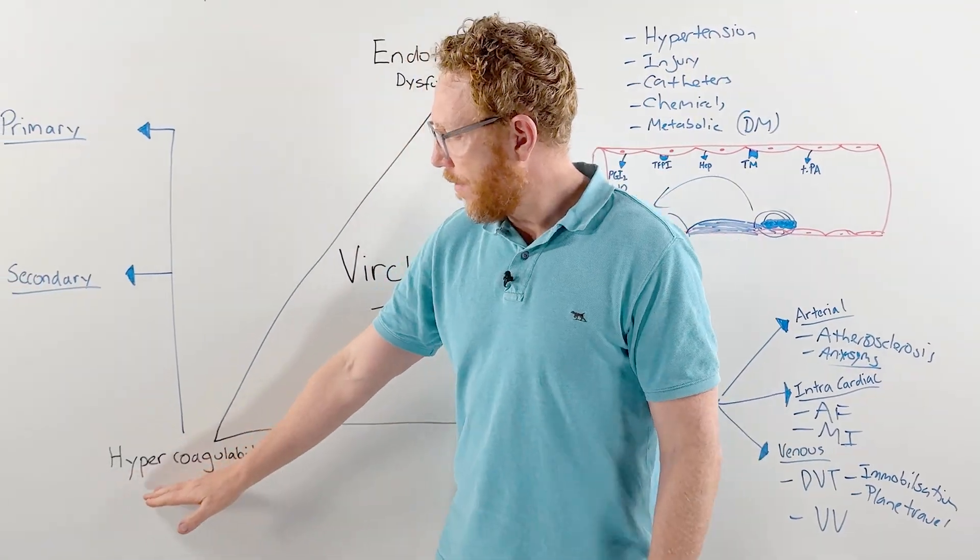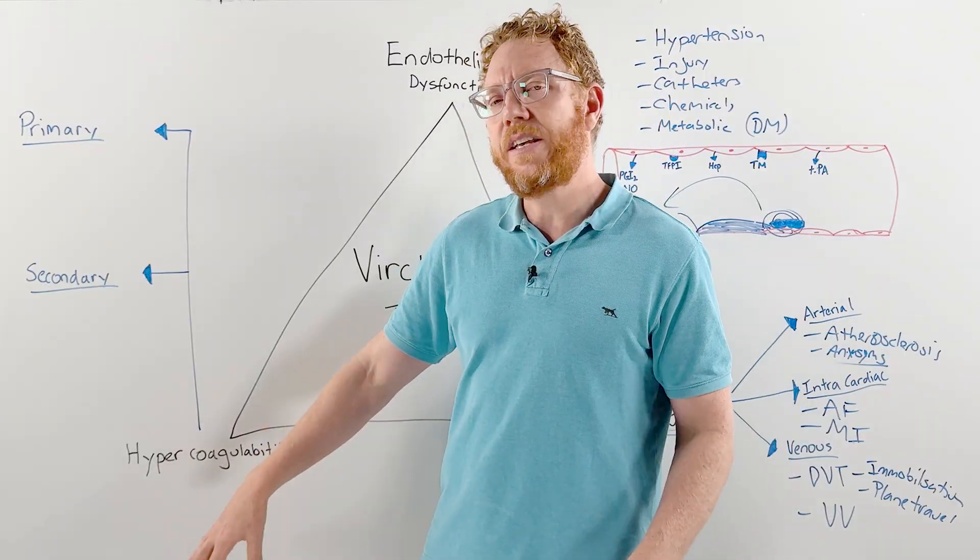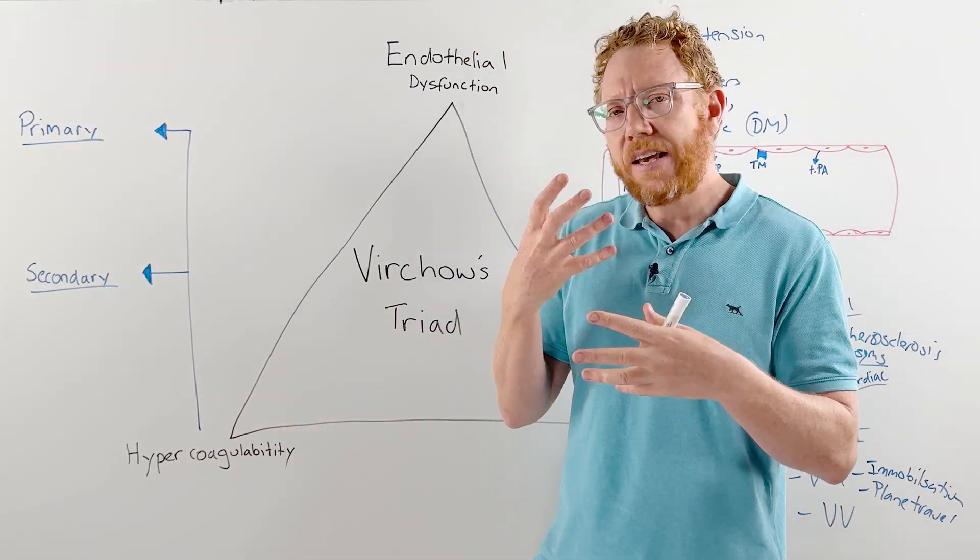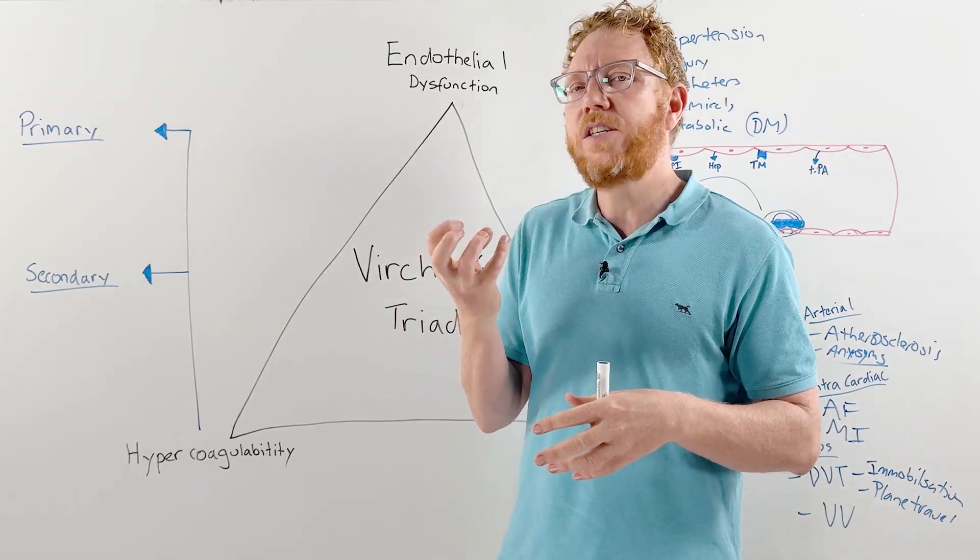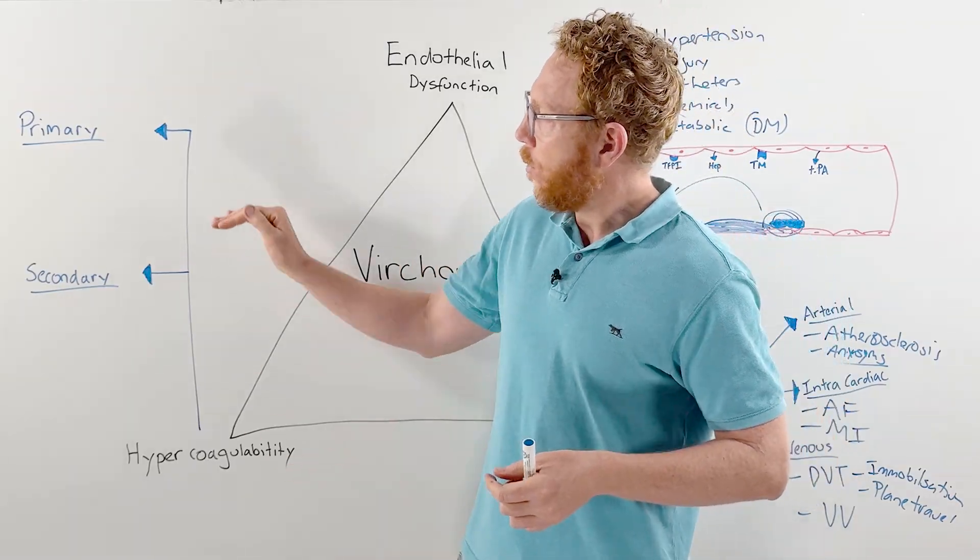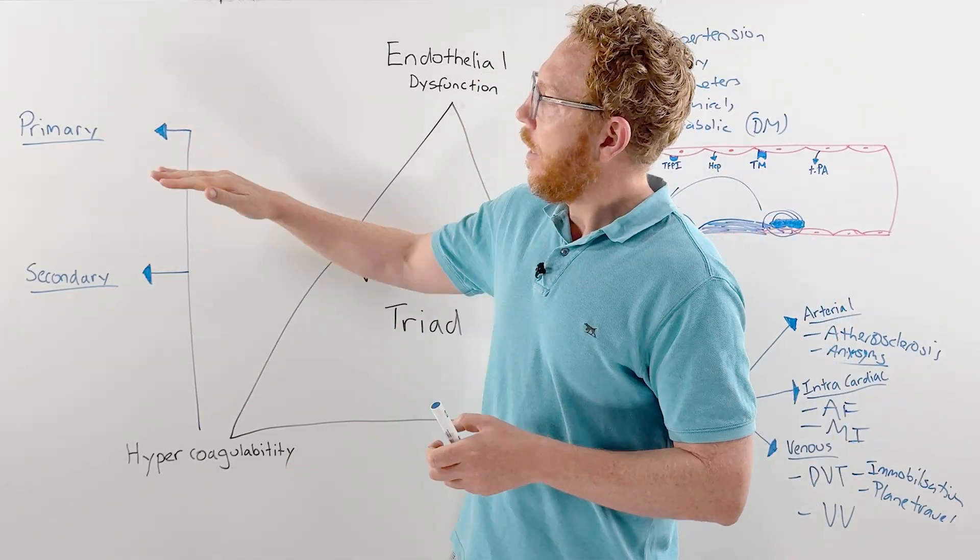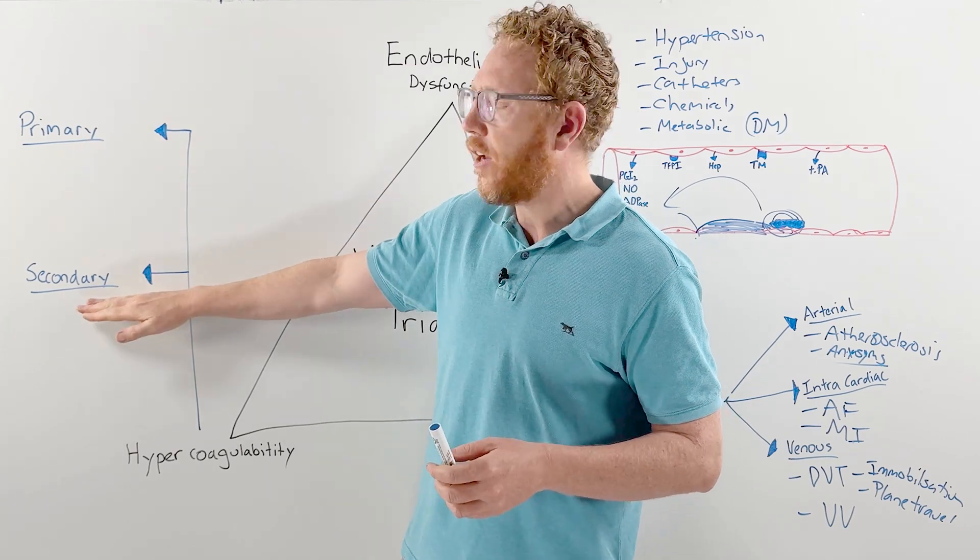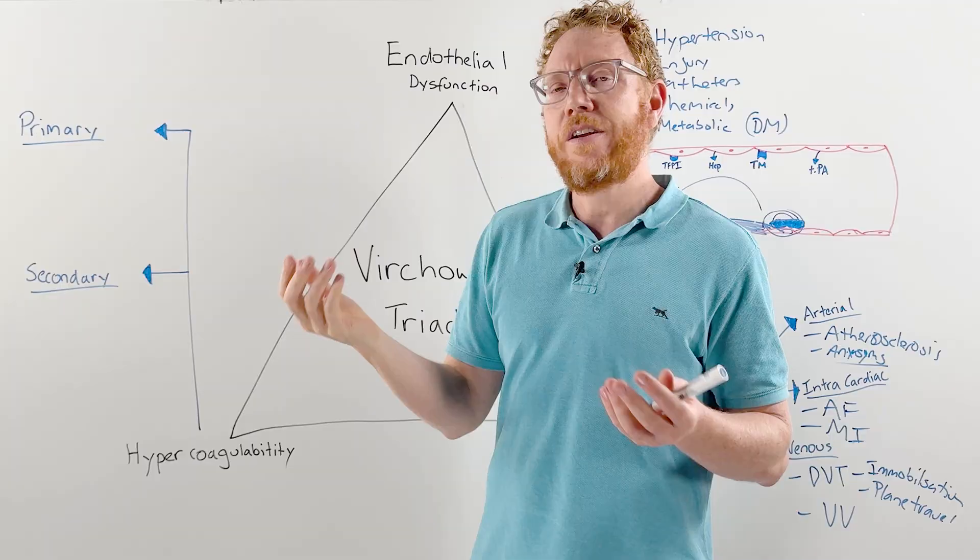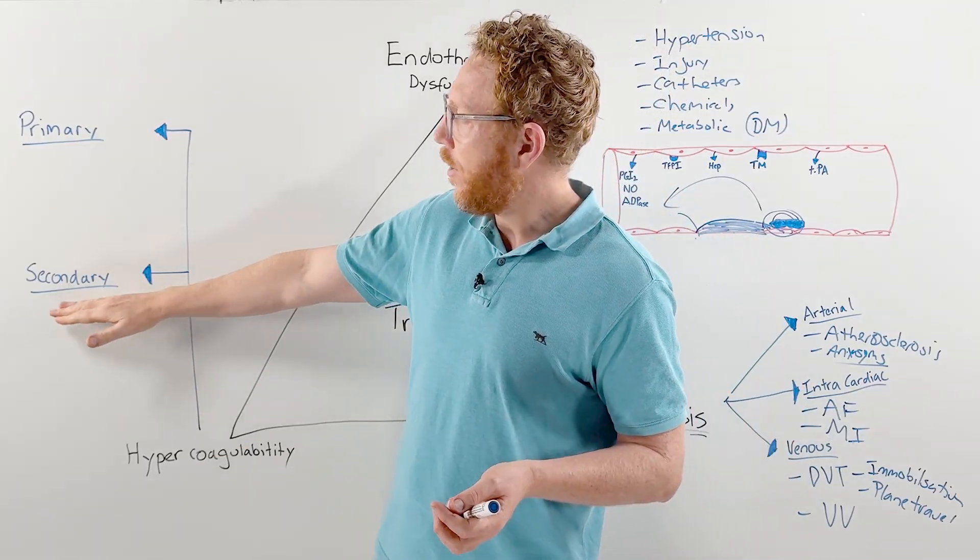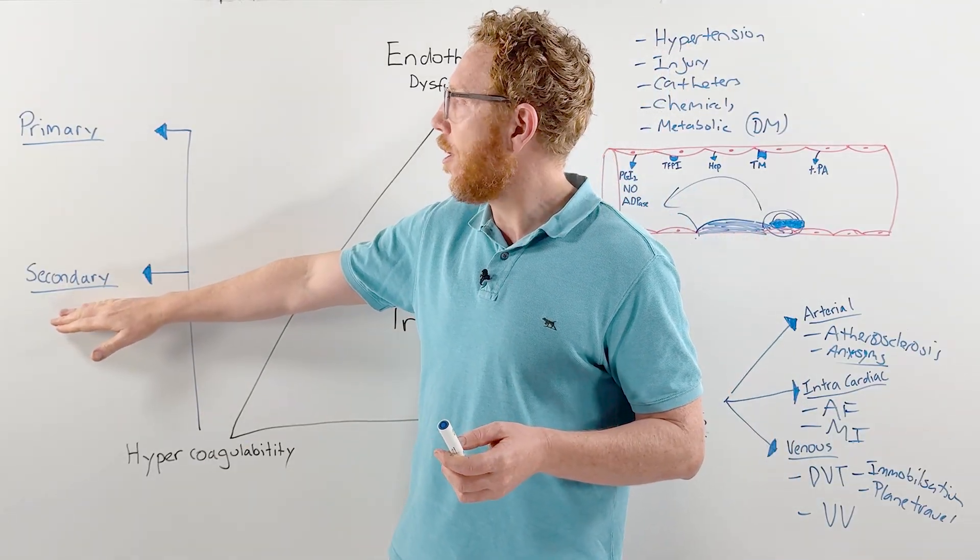Finally, we have hypercoagulability. This is essentially the clotting cascade being more likely to form, so the blood is more likely to want to start clotting. We can categorize this through primary and secondary causes. Primary is inherited disorders—what you inherit from mum and dad. Secondary is what you acquire during your life.